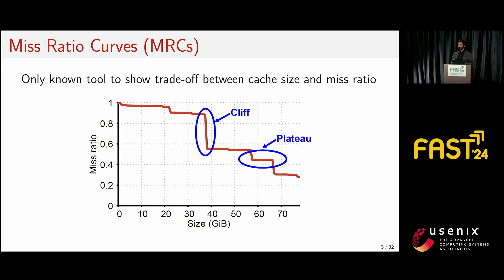The best tool to model — and really the only tool that models the trade-off between cache size and miss ratio, and thus performance — is the miss ratio curve, or MRC. The miss ratio curve plots cache size on the x-axis with the corresponding miss ratio on the y-axis. As you'd expect, as you increase the cache size, you get a reduced miss ratio and thus better performance. MRCs also have interesting regions, such as cliffs and plateaus.